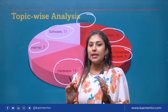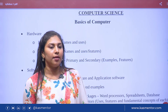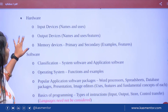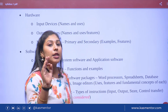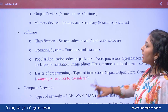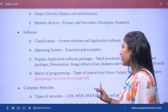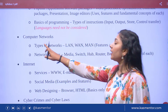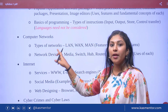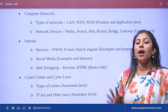This is our syllabus in 5 headings. First is hardware, which covers Input Devices, Output Devices, and Memory Devices. The second heading is Software: Classification, Operating System, Popular Application Software, and Basics of Programming. Third is Computer Networks: Types of Networks and Network Devices. Fourth is Internet. Fifth is Cyber Crimes and Cyber Laws.